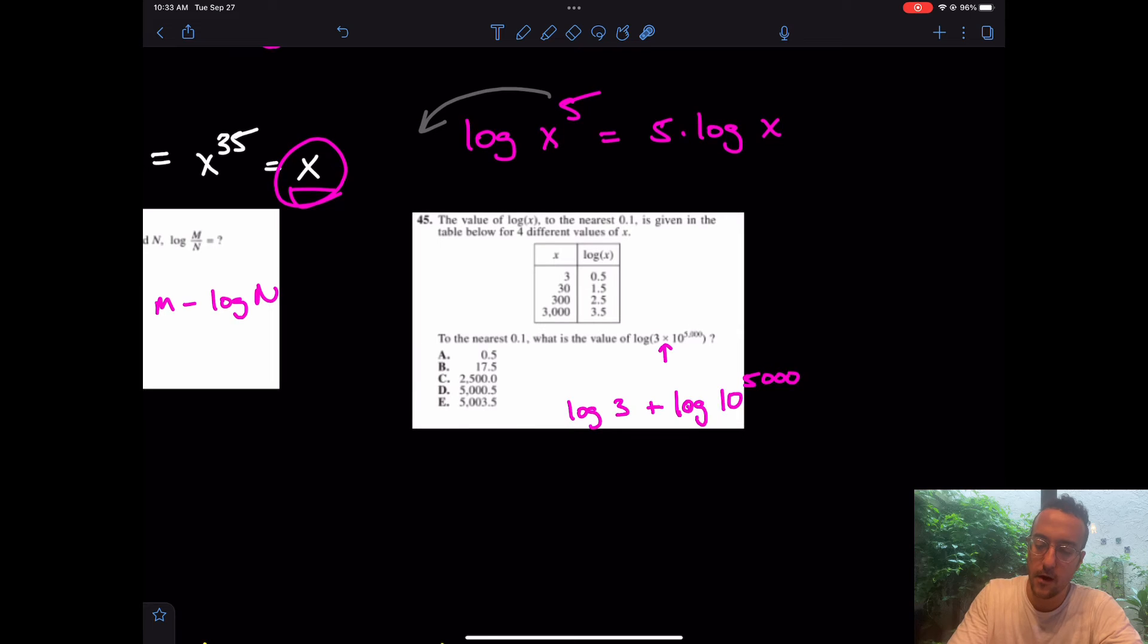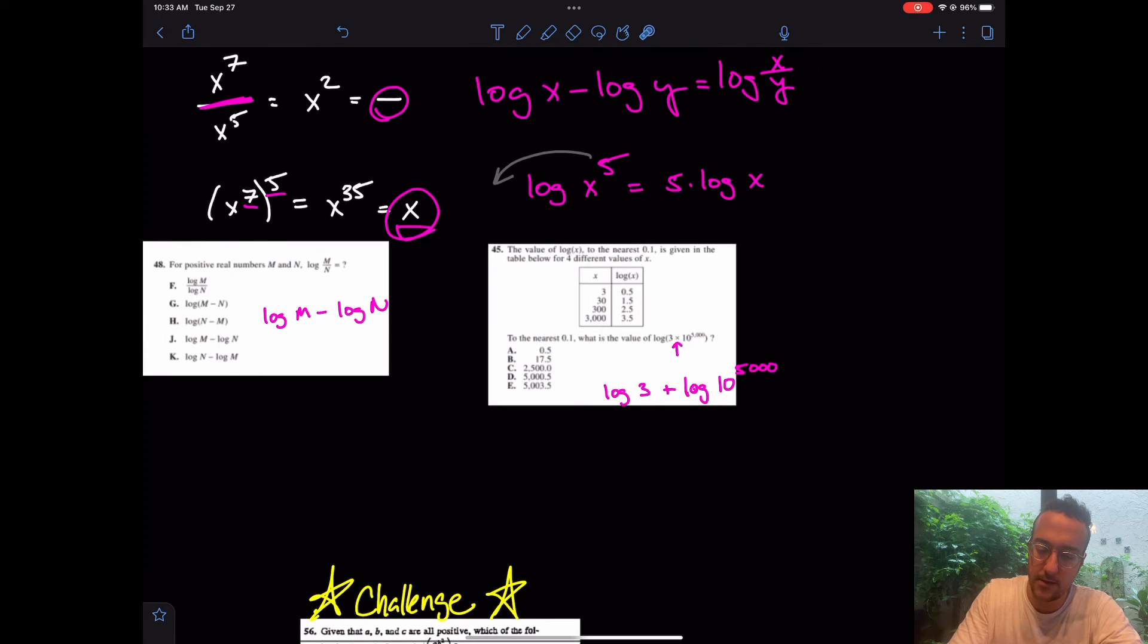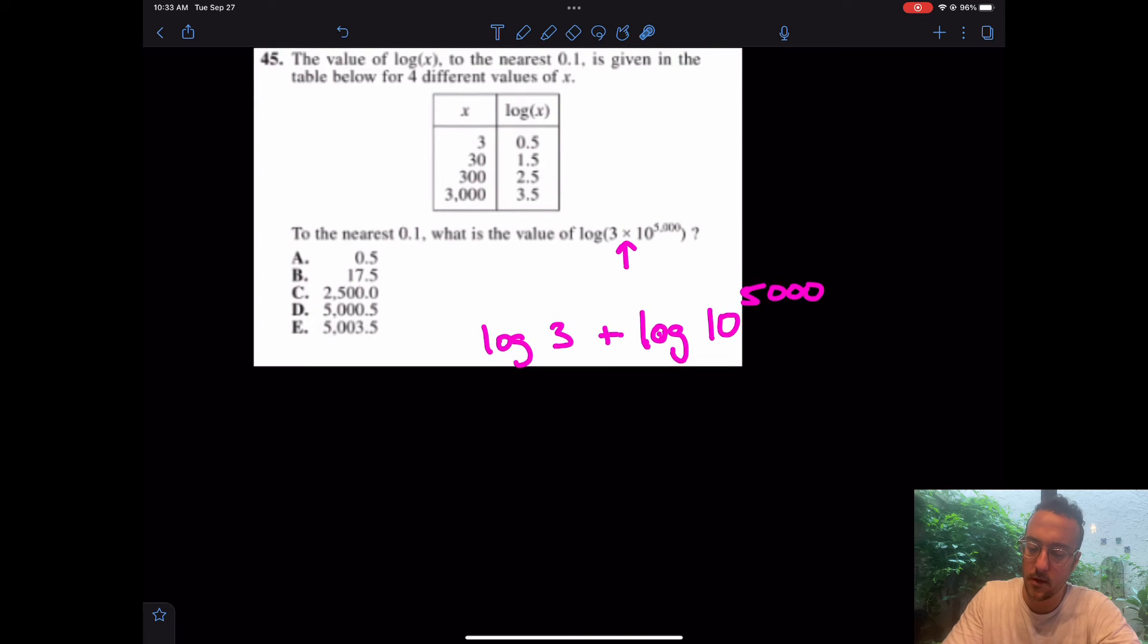But now what? What did we say earlier? If I zoom out a little bit, you can see it right there. Power of a power, it was multiplication. Really, what could I do with this power of the 5? I could drop it to the front. So although this value is too big for our calculator, 10 to the 5,000, what could I do with that 5,000? I can drop it to the front. I have log of 3 plus 5,000 times log of 10.